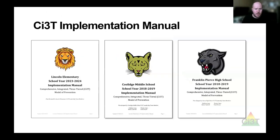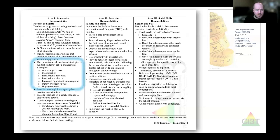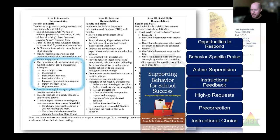We develop a CI3T implementation manual where school teams come together and communicate with their school communities, families, and students to develop a plan for teaching kids across these tiers. For academics, we describe specifically what we're teaching, how much, when, and how to present curriculum in an engaging way — using strategies like opportunities to respond, instructional choice, behavior-specific praise, pre-correction, and active supervision. For behavior, we make sure we're implementing our PBIS framework with fidelity, and when we encounter challenging behaviors, we respond in a way that's positive, professional, and instructive.